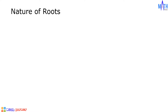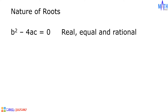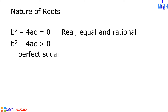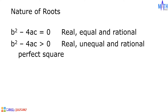If the discriminant is equal to zero, the roots are real, equal, and rational. If the discriminant is greater than zero and is a perfect square, the roots are real, unequal, and rational.